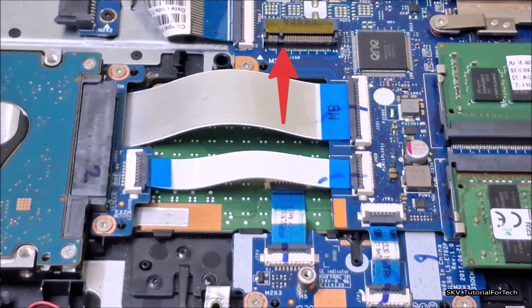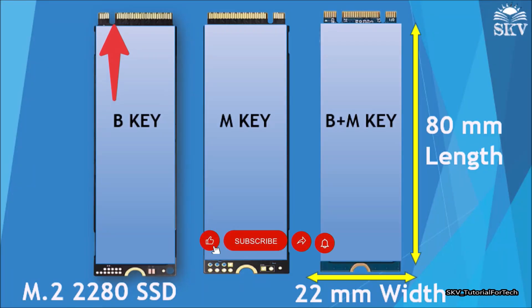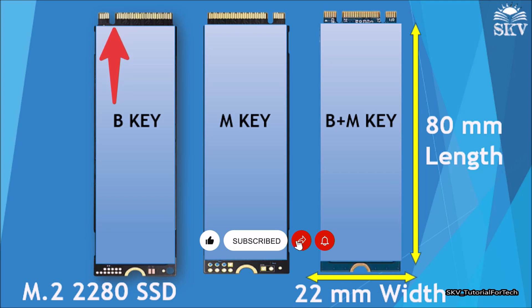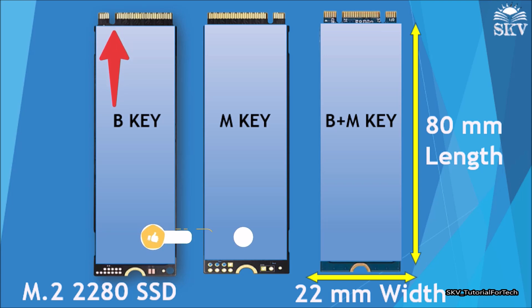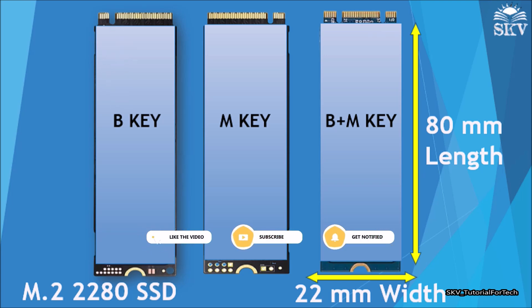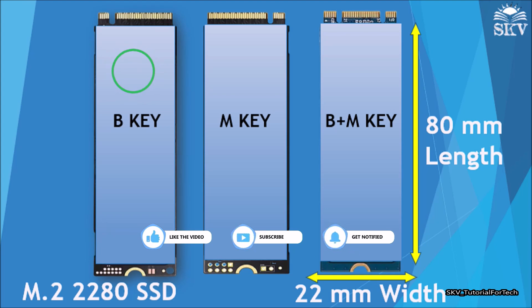On the left side, if you see only a B-keyed M.2 slot, these slots are designed for SATA SSDs or older NVMe SSDs that use a PCIe x2 connection. However, they may have limitations on the maximum number of PCIe lanes supported for NVMe drives compared to M-key slots. Typically, it supports SATA SSD connections.